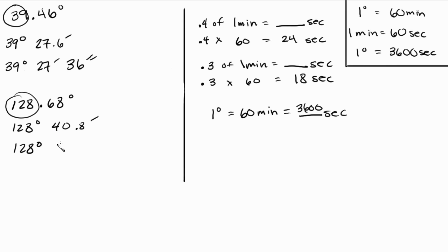Okay, so you bring down the 128 and you bring down the 40 minutes, and then that 0.8 you multiply that times 60 and that gives you the 48 seconds. So now we have 128 degrees, 40 minutes, and 48 seconds.